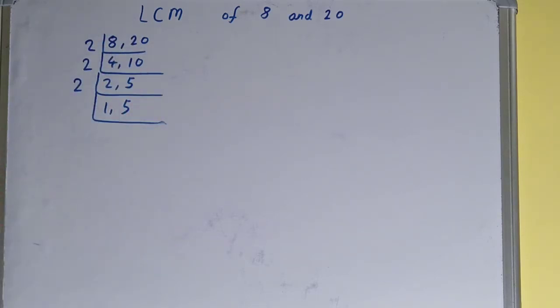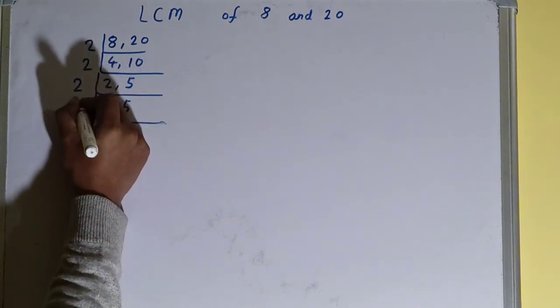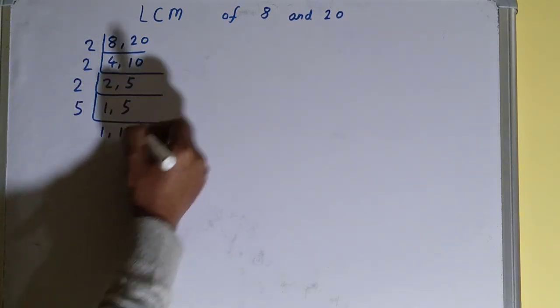Again we'll check: is any of the number divisible by 2? None of the numbers. So we'll go to the next prime number, that is 3. Is any of the numbers divisible by 3? None of the numbers. So we'll go to the next prime number, that is 5. And this number is divisible by 5, so we'll divide and we'll have 1 comma 1. Once we have 1 comma 1, we are done.